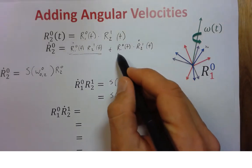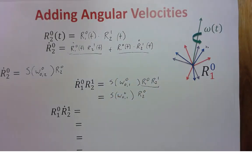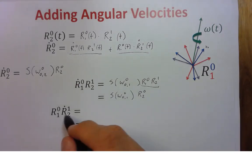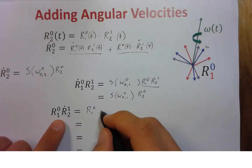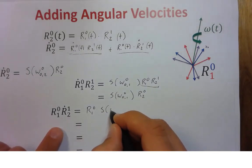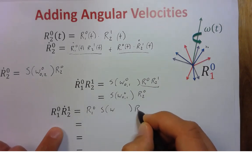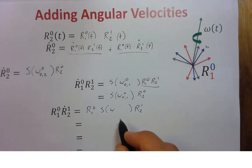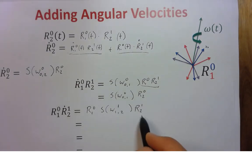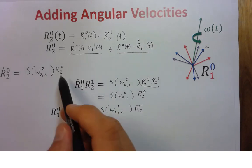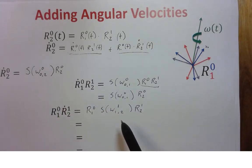The second term is slightly more interesting. We have R_{1,0}, and the time derivative of R_{2,1} gives a skew-symmetric matrix around omega from 1 to 2, times R_{2,1}. This angular velocity is in frame 1 — but we want it in frame 0, so we have a problem.